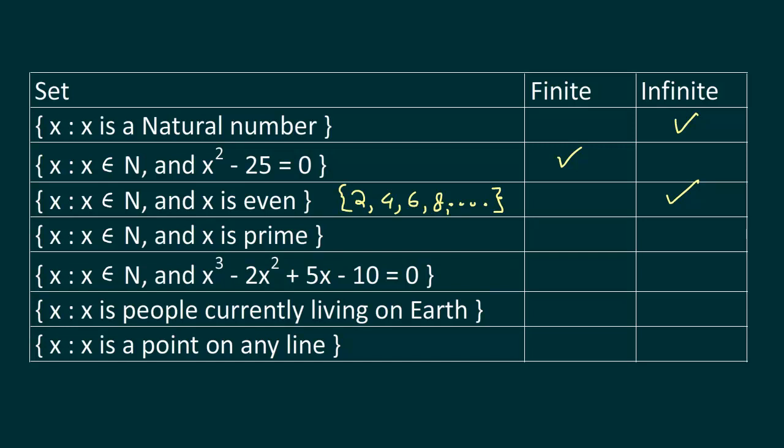What about the next one? x belongs to natural numbers and x is prime. This will be something like 2, 3, 5, 7, 11, and it will go on and on. So this will be an infinite set.